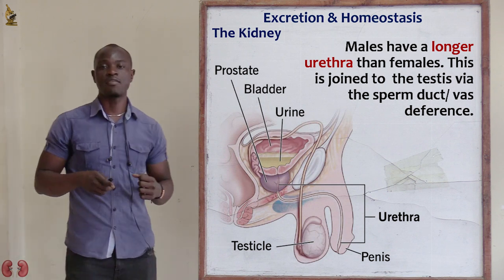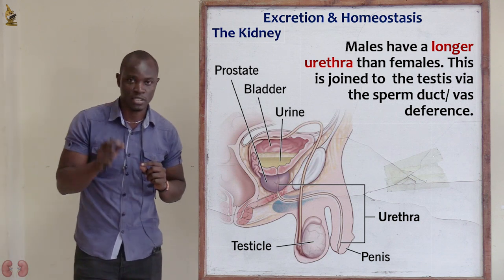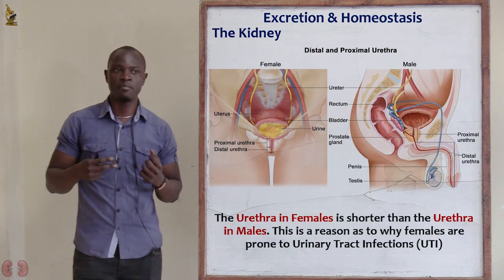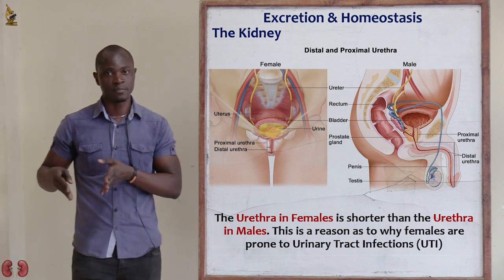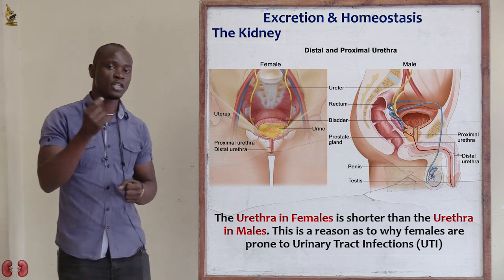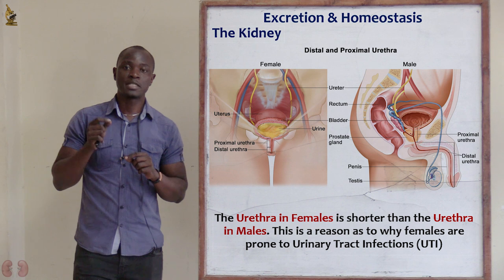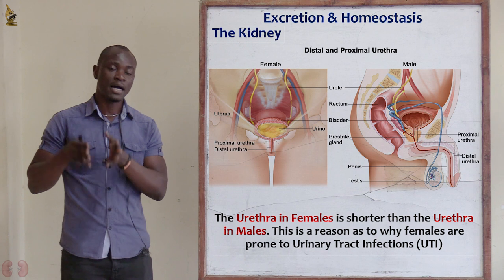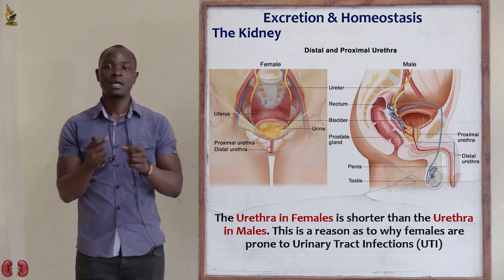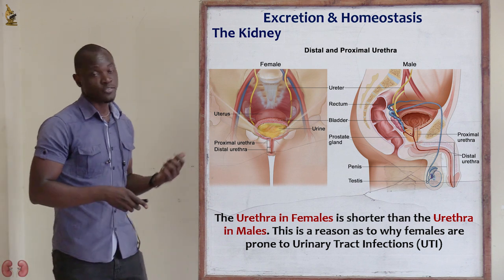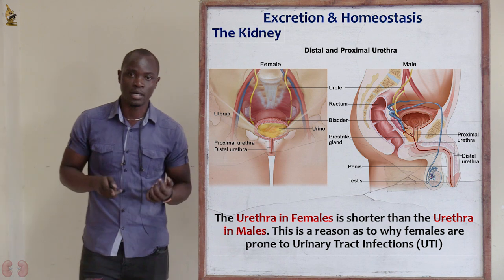Males have a longer urethra compared to females. Because the female urethra is very short, females are more prone to getting urinary tract infections. The short urethra makes it easy for bacteria to enter the urinary system. For males, since the urethra is very long, bacteria trying to travel up the urinary system will be destroyed by the acidic nature of the urethra, making it very difficult for pathogens to reach and damage the urinary system.